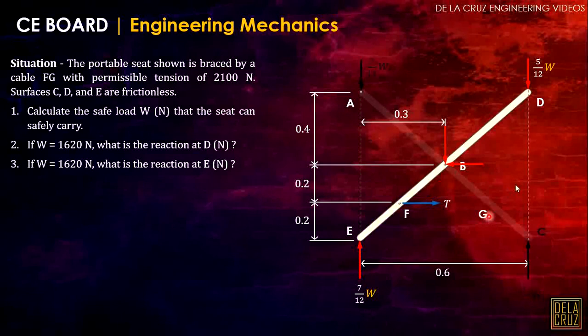Now, if we take moment about B, these two can be neglected and the remaining unknown is this one. Summation moment about B must be zero. That will be 7 over 12 of W times 0.3, the moment arm that will cause clockwise rotation.